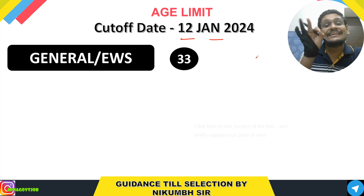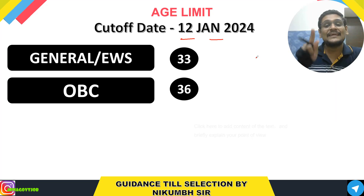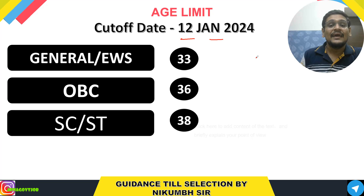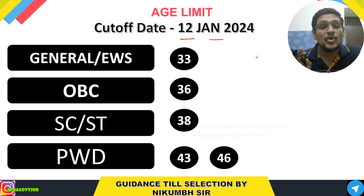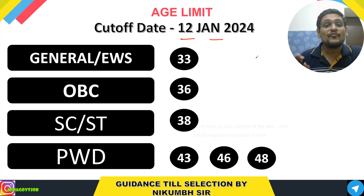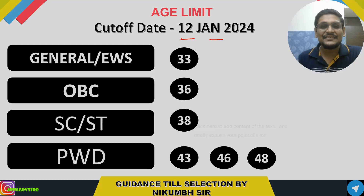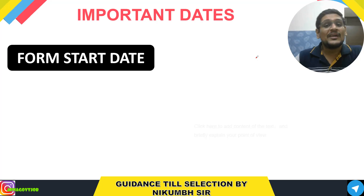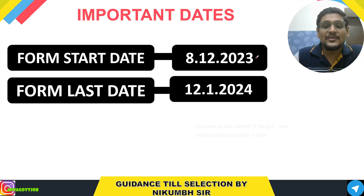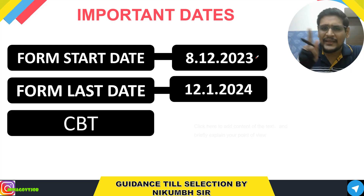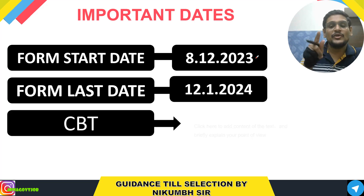Age limits: for General it is 33 years, for EWS and OBC it is 36, for SC/ST it is 38, and for PWD it is 43 for General, 46 for OBC, and 48 for SC/ST. The form has already started on 8th December and will end on 12th January. CBT is tentatively scheduled for February.